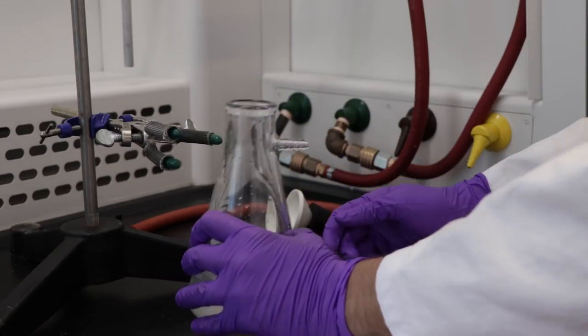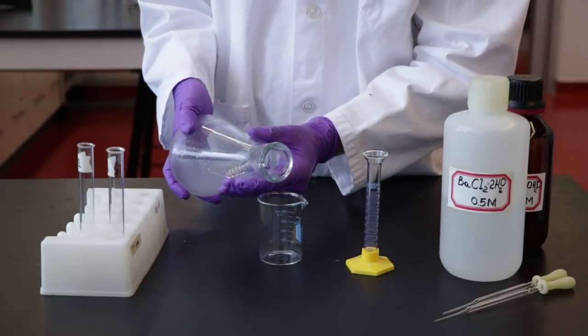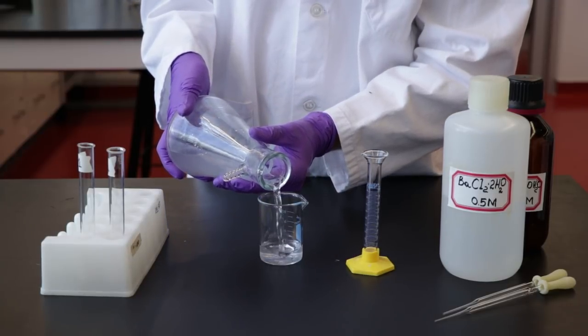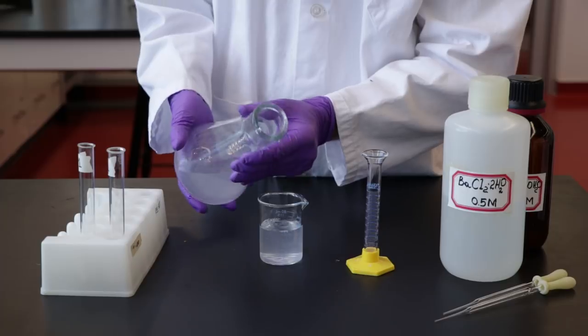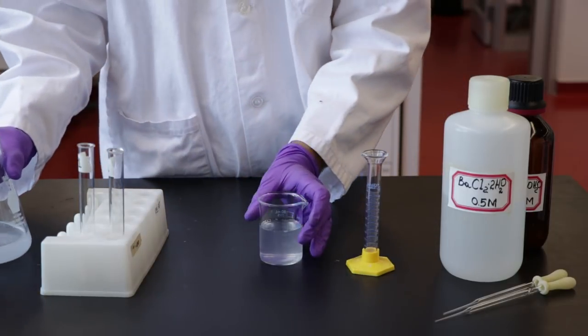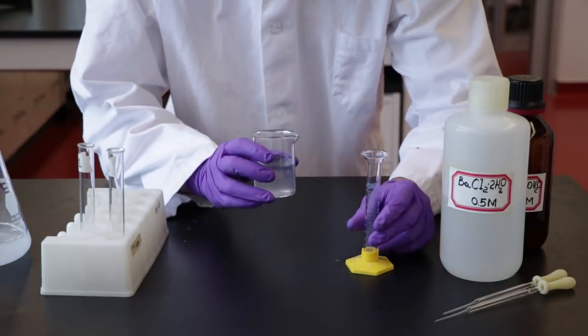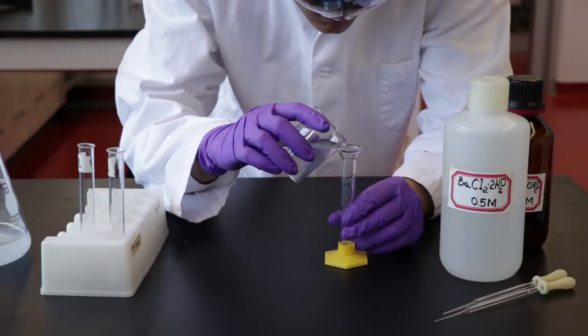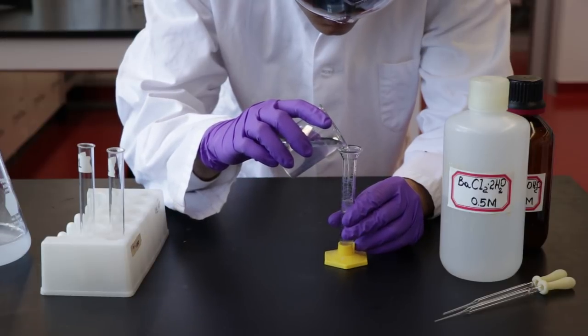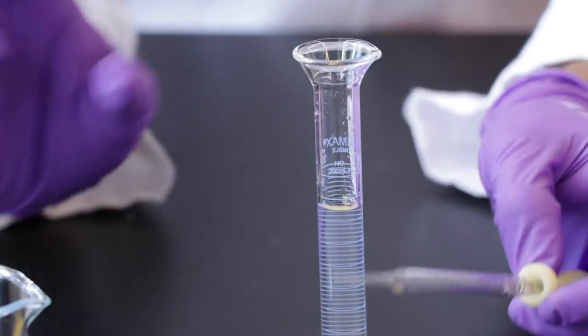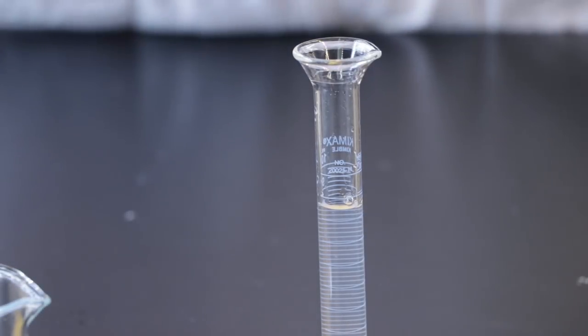Collect the supernatant from the vacuum flask. Then pour 20 milliliters into two test tubes. Use a graduated cylinder when transferring the 20 milliliters of supernatant, and use a pasteur pipette to get the meniscus to the mark.